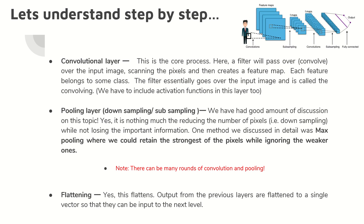This layer also includes activation functions, which we will talk about a little later. Now the next layer is the pooling layer, also regarded as the downsampling or subsampling layer. We have already discussed clearly about max pooling, average pooling, and sum pooling in my previous couple of sessions.